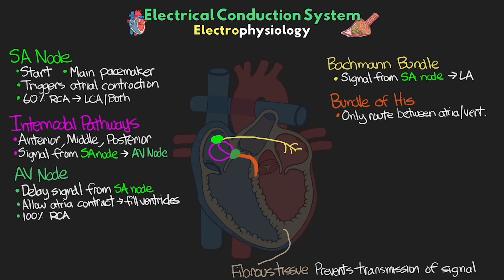The bundle of His eventually bifurcates into two branches. The first one is our right bundle branch, or RBB — one of the two branches of the bundle of His. These high-speed transmission cells are responsible for carrying that signal to the right ventricle. The right bundle branch terminates into our Purkinje fibers, which we'll cover in just a second.